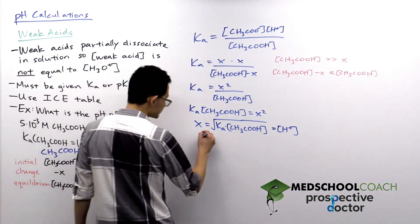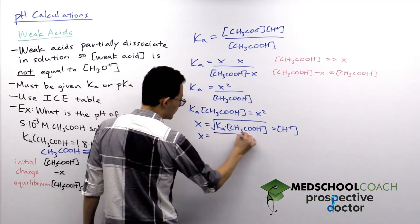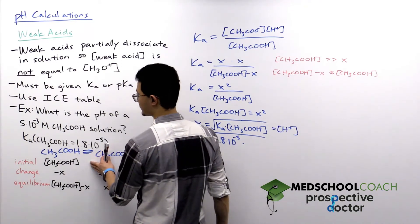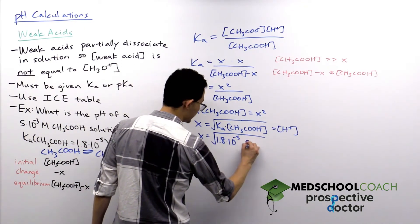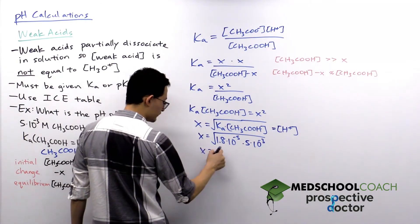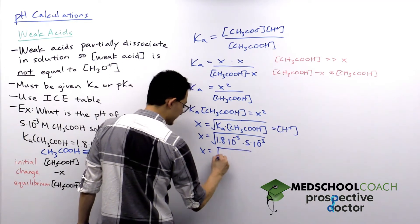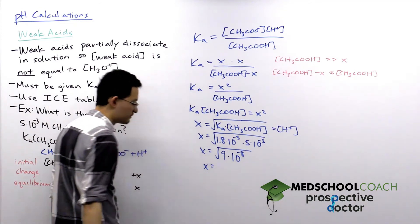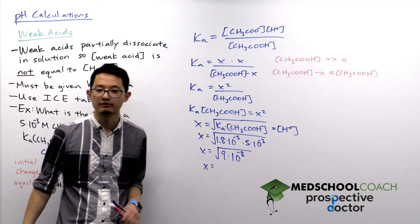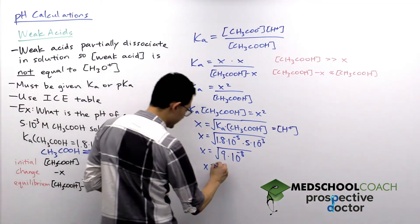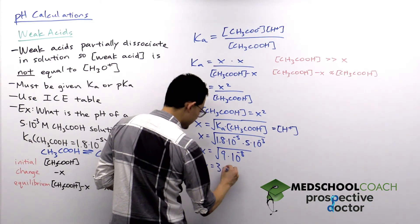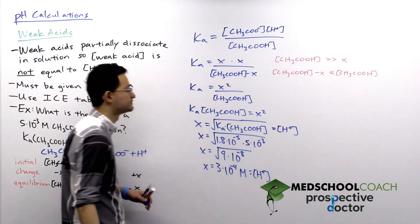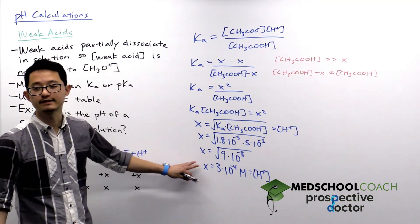Let's plug in the numbers. Ka = 1.8 × 10⁻⁵ and the acetic acid concentration = 5 × 10⁻³. Multiplying gives 1.8 × 5 = 9, and 10⁻⁵ × 10⁻³ = 10⁻⁸, so we have 9 × 10⁻⁸. We then take the square root: √9 = 3 and √(10⁻⁸) = 10⁻⁴. So X = 3 × 10⁻⁴ molar, which is the concentration of H⁺.